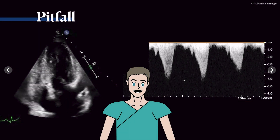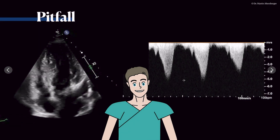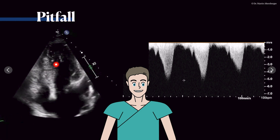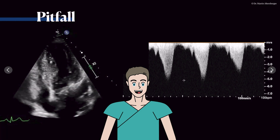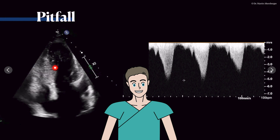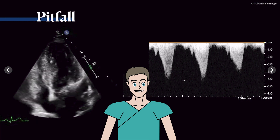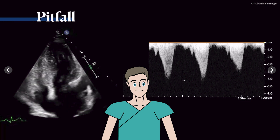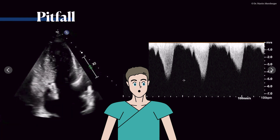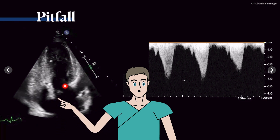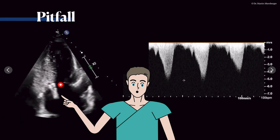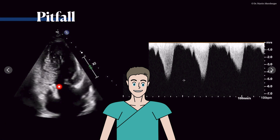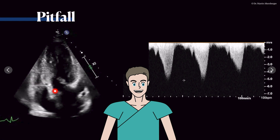A pitfall to mention in this case is the so-called SAM phenomenon. Here we have a hypertrophied ventricle — especially the septum is hypertrophied — the rest looks rather normal. The ejection fraction also looks normal, even on the high normal side. When you look at the mitral valve, you can see a motion of the anterior mitral valve leaflet towards the LVOT beginning here.